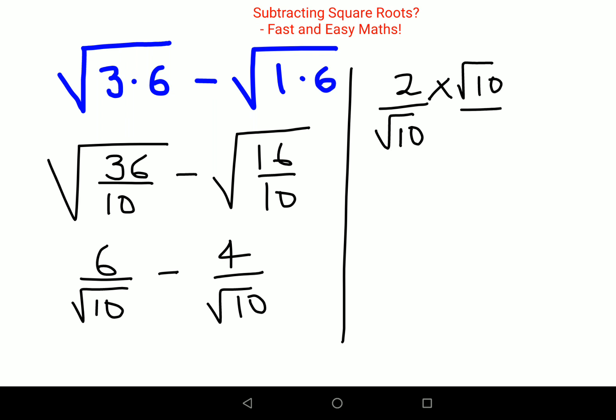Basically multiplying by root 10 with the denominator as well as the numerator. So you get 2 into root 10 upon root 10 into root 10, which will just get you a 10.